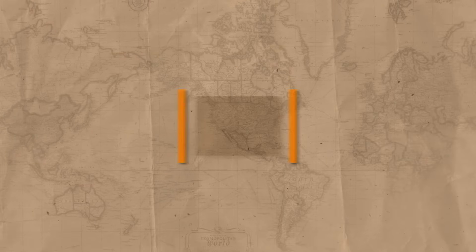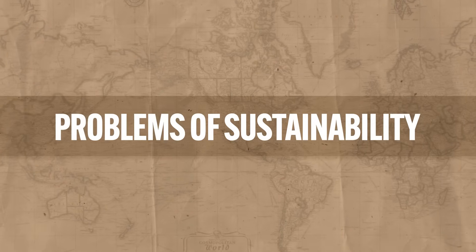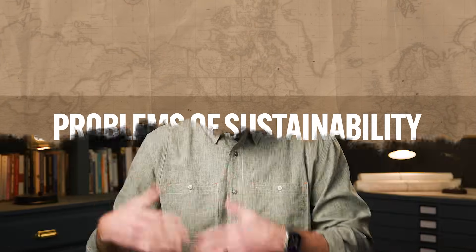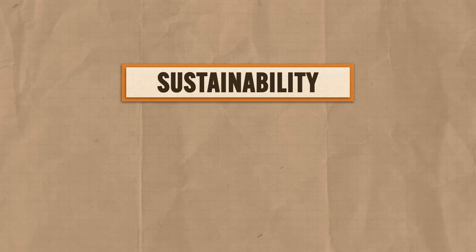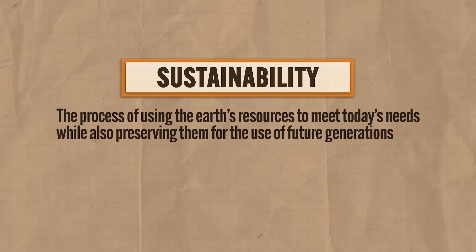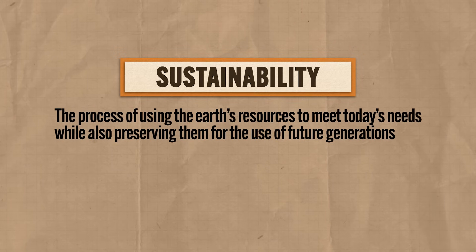If you've been paying attention throughout this course, we've talked a lot about sustainability in various contexts like agriculture and urban environments. But here we're going to think about it with respect to the structure of the globalized economy. And in case you forgot, sustainability refers to the process of using the Earth's resources to meet today's needs while also preserving them for the use of future generations.